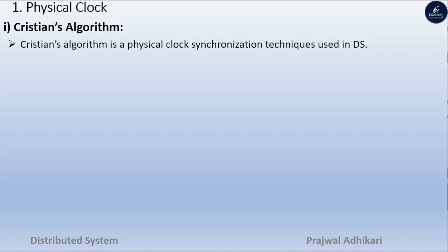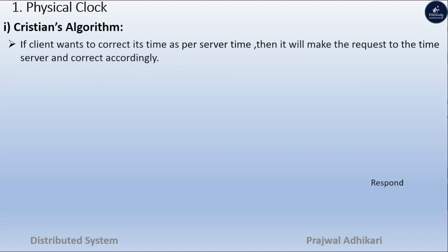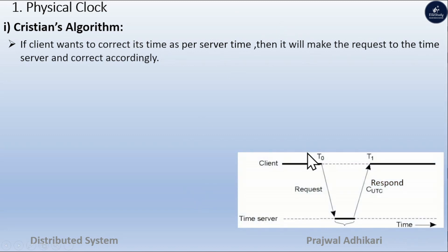Now we will study Christian's algorithm. Christian's algorithm is a physical clock synchronization technique used in distributed systems. It is the simplest algorithm for setting time. It is based on the client-server concept, making use of Remote Procedure Call (RPC). If a client wants to correct its time as per the server time, it sends a request to the time server, which responds with the current UTC (Universal Time Coordinate).